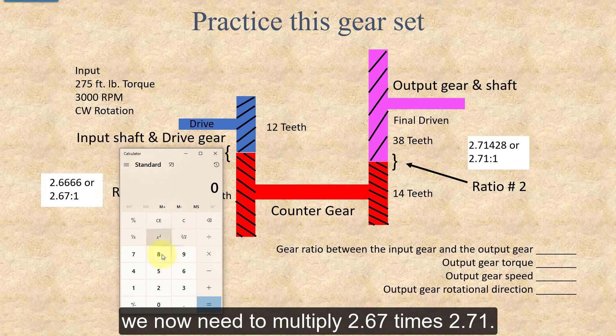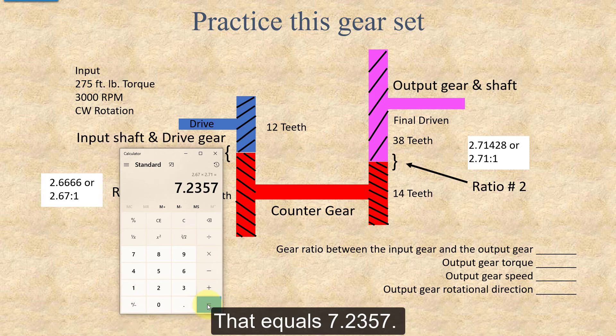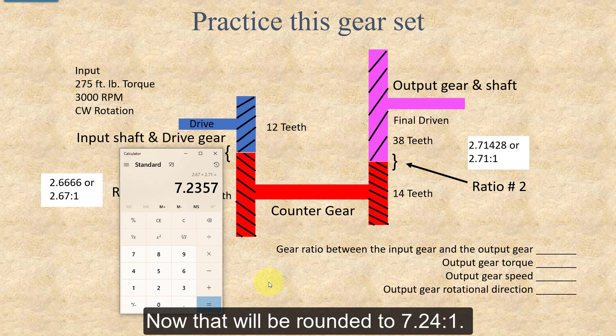To calculate the overall gear ratio for this gear train, we now need to multiply 2.67 times 2.71. That equals 7.2357. Now that will be rounded to 7.24 to 1.